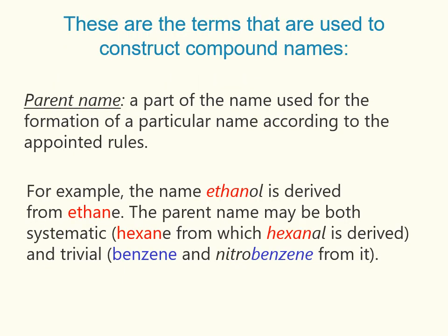These are the terms used to construct compound names. Parent name: a part of the name used for the formation of a particular name according to appointed rules. For example, the name ethanol is derived from ethane. The parent name may be both systematic or trivial.